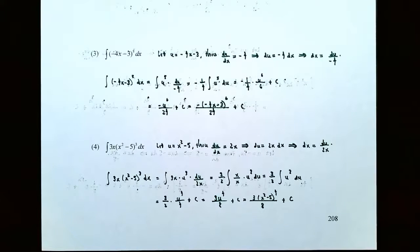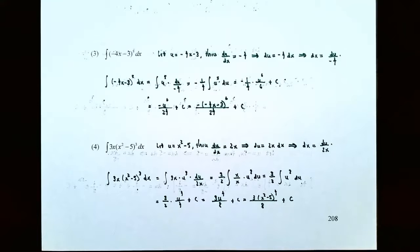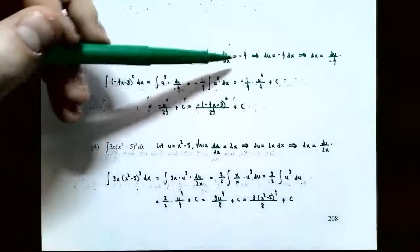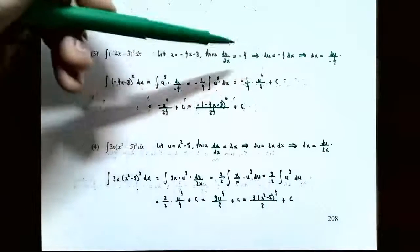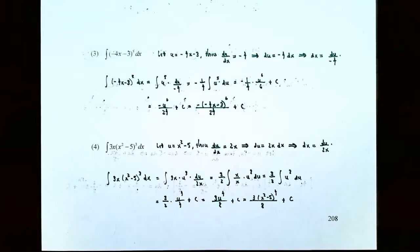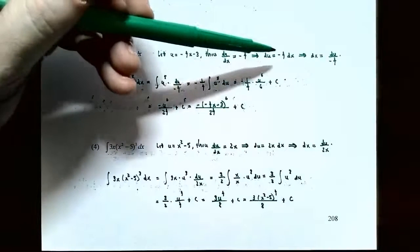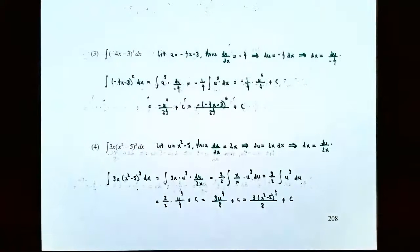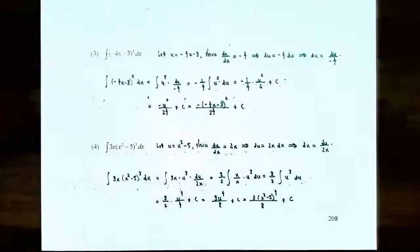Remember how the substitution method works for finding the family of antiderivatives for a composite function. You want to find the inside function — in this case it's negative 4x minus 3, so you call that u. So u equals negative 4x minus 3. Now take the derivative of the inside function: du/dx equals negative 4. Since we're replacing negative 4x minus 3 with u, we also have to replace dx in terms of u. Multiply both sides by dx to get du by itself: du equals negative 4 times dx. Notice only dx appears, not negative 4 dx.